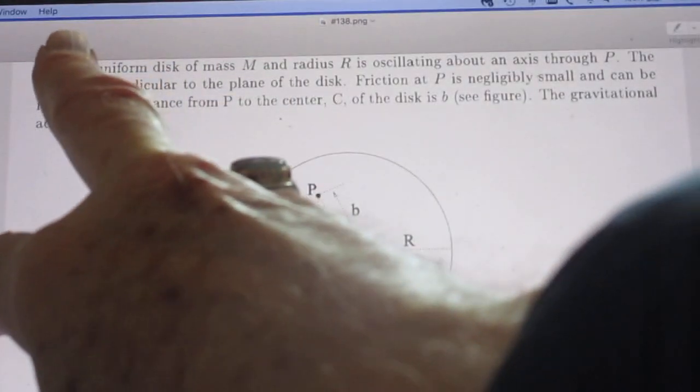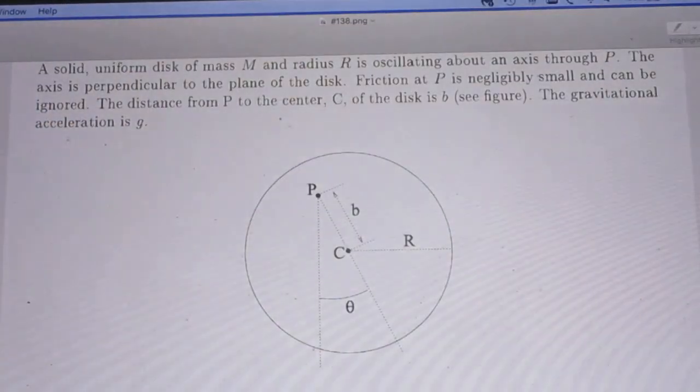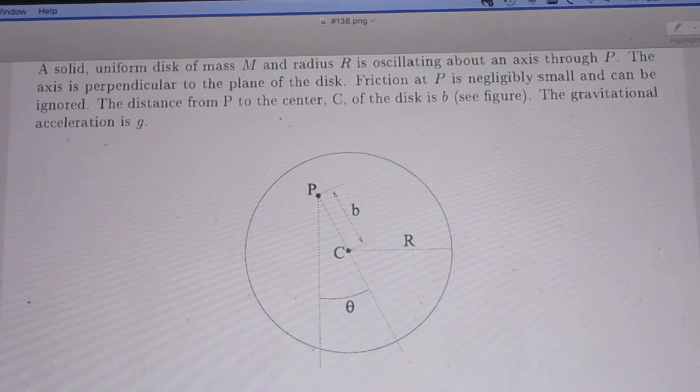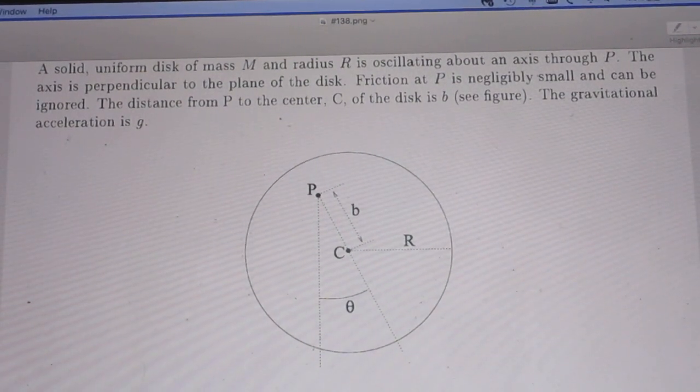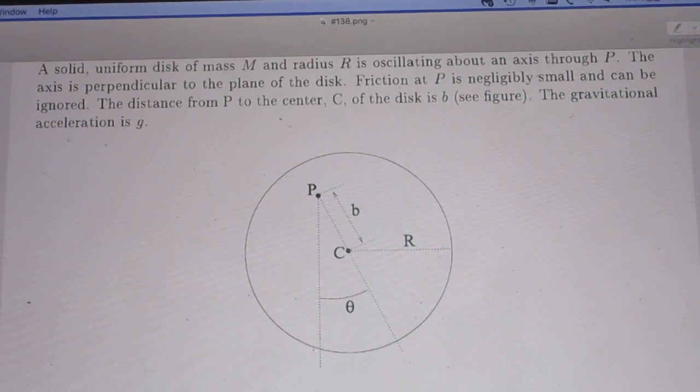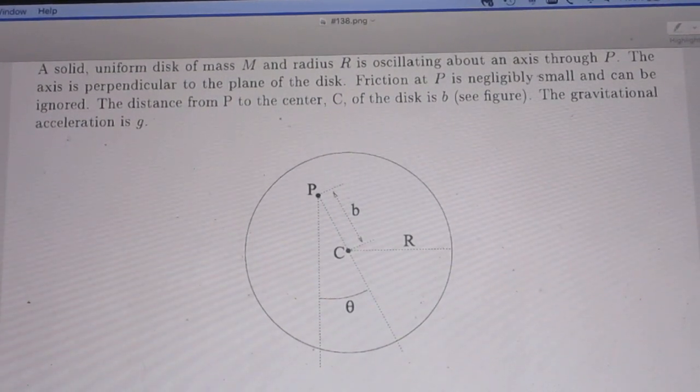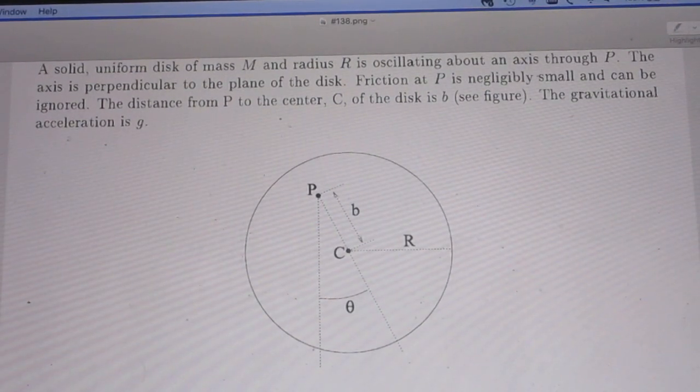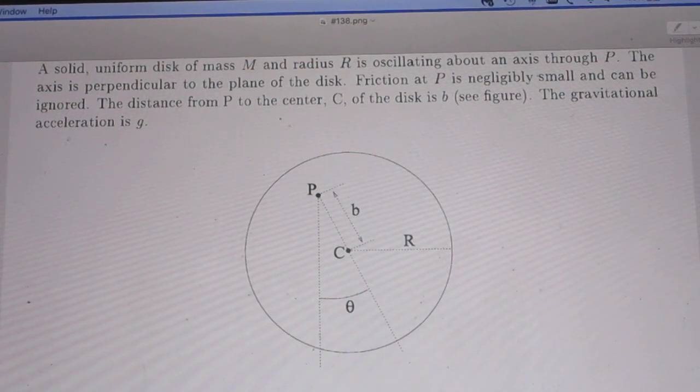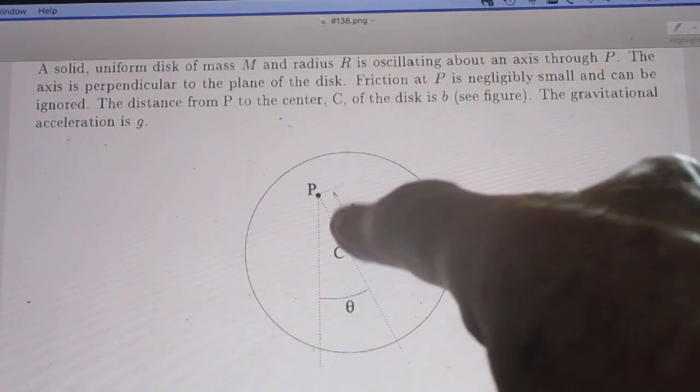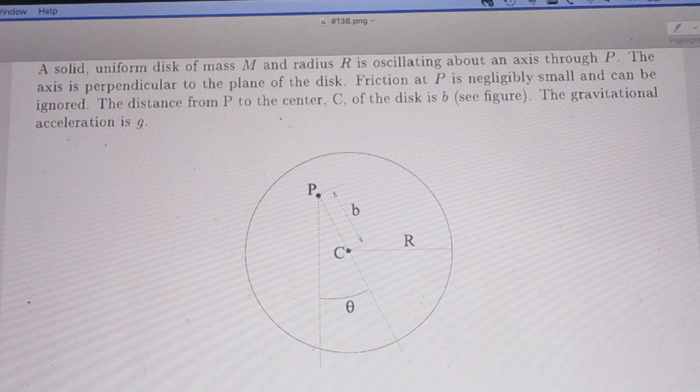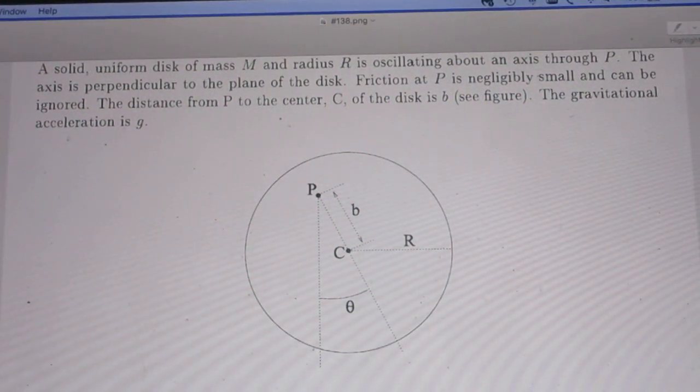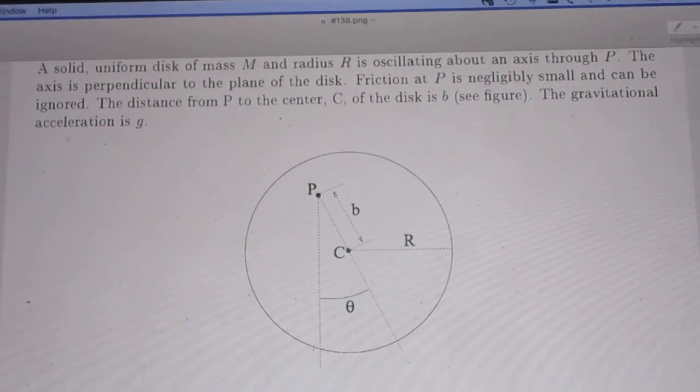You see here, a solid uniform disc of mass M and radius R is oscillating about an axis through P. So here is the disc, radius R, it's oscillating through a point here.